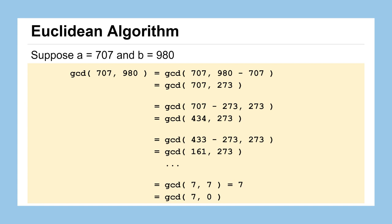Let's figure out why this works. It hinges on the fact that instead of finding the greatest common divisor of two numbers as they are, you can find the greatest common divisor of the smaller number and the difference between the bigger and the smaller number, and get the same answer.